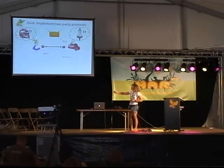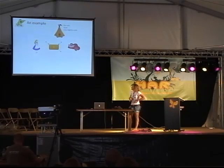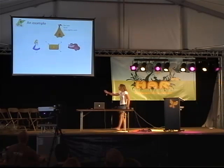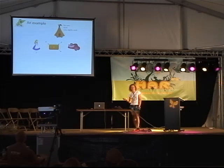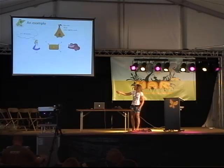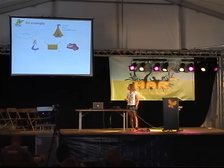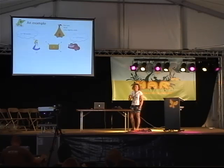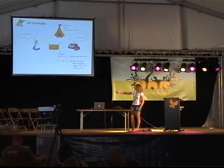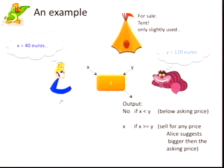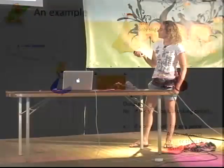In reality, they don't have such a beautiful box, but they have to solve this problem by talking over a channel — say a classical or in fact a quantum channel. For example, maybe Bob, after he's had enough of camping, wants to sell his tent and places an ad for a slightly-used tent. Alice is potentially interested in buying this tent and has in mind maybe it's worth 40 euros. Bob thinks it's worth much more — maybe 120 euros. One possible function they could wish to evaluate: if Alice is willing to pay less than Bob's minimum asking price, output no and reject the transaction; otherwise, output the price Alice suggested, and Bob is happy with anything above his minimum.